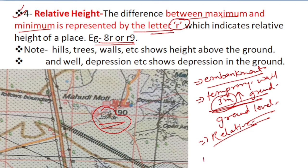In the case of a well, it represents the depth of the well. Important word is depth. For example, suppose it is given r10, meaning 10 meters below the ground surface.